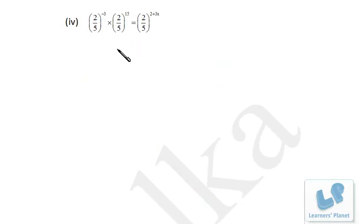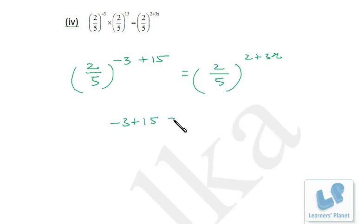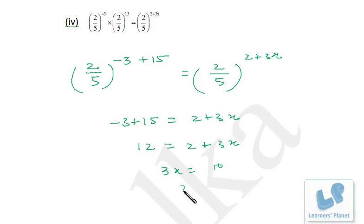Now we have base 2/5. So it's 2/5 raised to minus 3 plus 15, because a multiplication sign is there, so the powers will be added: minus 3 plus 15. Since base is same, power will be same. So minus 3 plus 15 equals 2 plus 3x. 15 minus 3 is 12, so 12 equals 2 plus 3x, giving 3x equals 10, so x equals 10/3. Isn't it very simple? Just needs some practice.